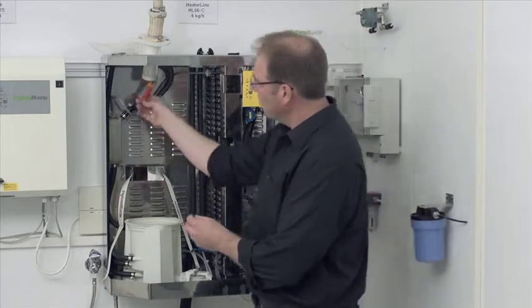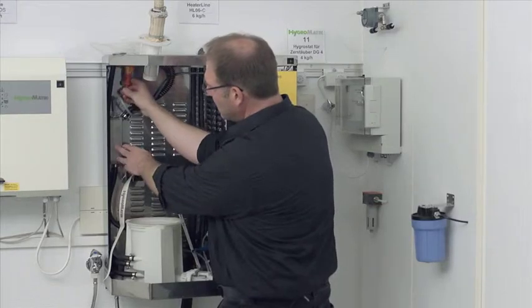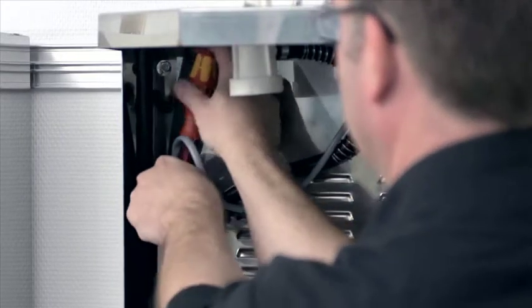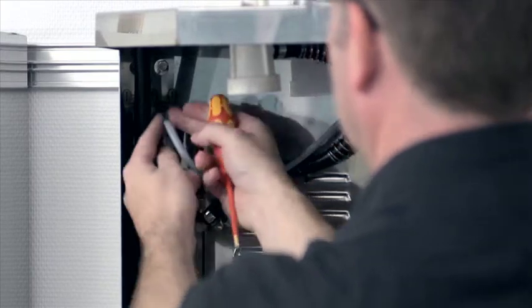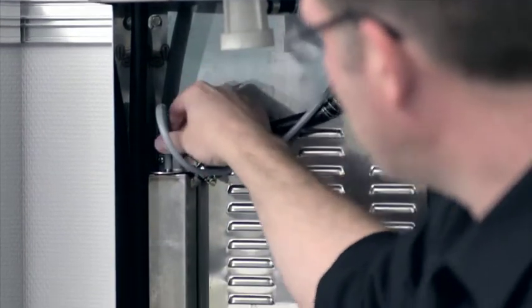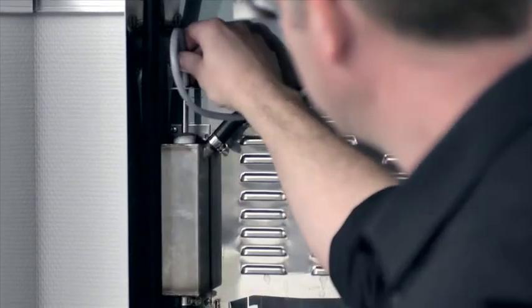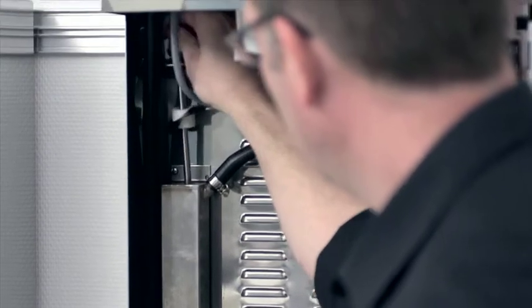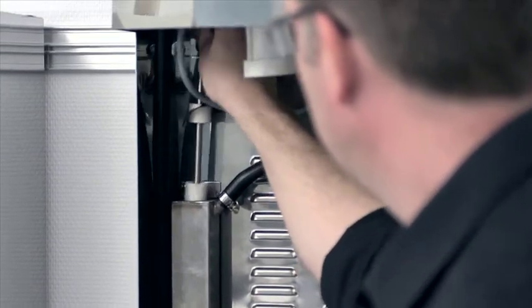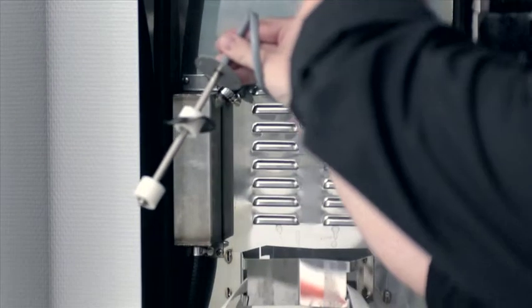To do so, I just unfasten the four screws on top here. Then I can pull out the float switch. On top here there is only one other small flat seal in between.